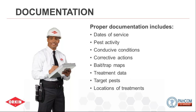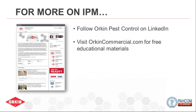Documentation should also include bait and trap maps showing where all devices, products, and equipment are located at your facility, as well as treatment data and the locations of those treatments. You can always get more information on integrated pest management at OrkinCommercial.com, where there are free educational materials, tips, pest-specific guidelines, and manuals for shoring up your facility exterior — including for pests like birds. Follow Orkin on LinkedIn as well.